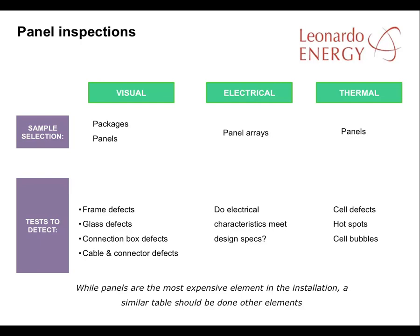A range of specifications of different elements will be needed as part of the quality assurance process. Here we're using panel inspection as an example because the panels are the most expensive element in the installation. It would be impossible to inspect all of the modules delivered to a big plant, so you pick out some samples. These should be subjected to visual, thermal, and electrical inspection. The visual inspection is to detect frame defects, glass defects, as well as connection box and cable or connector defects.